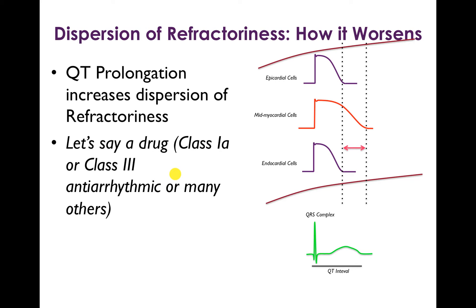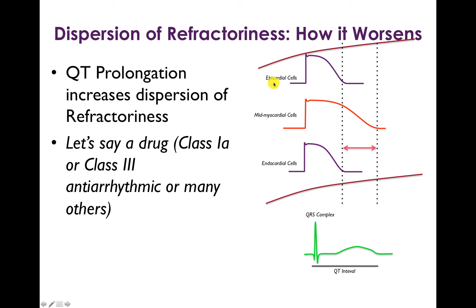So whatever drug it is, it prolongs action potential duration — not just of the epicardial cells and the endocardial cells, but also the midmyocardial cells. So all the action potential durations prolong. But importantly, since there's already heterogeneity in the action potential duration, when you lengthen everything out, you make the heterogeneity even worse and you get even more dispersion of refractoriness. That's shown on the surface EKG by a prolongation of the QT interval.